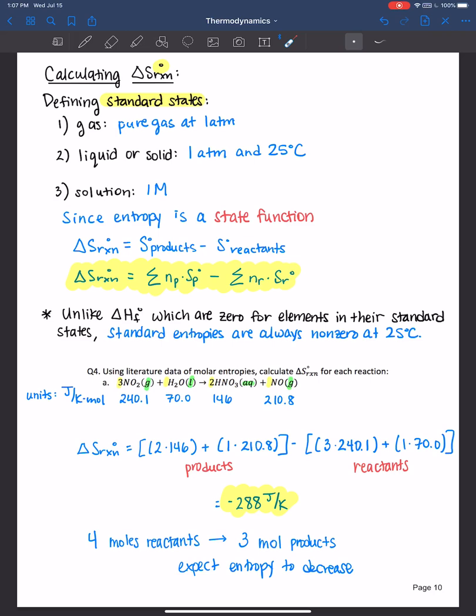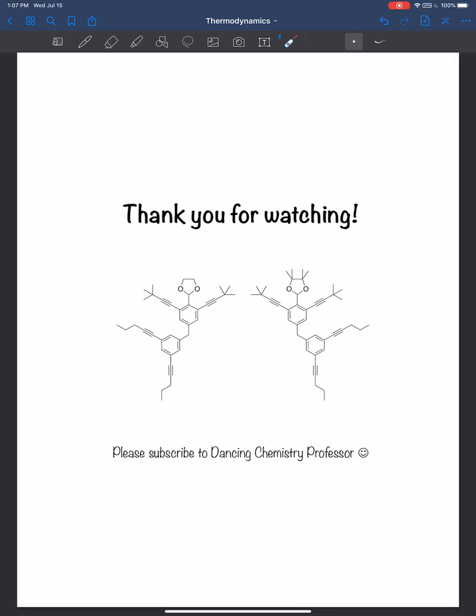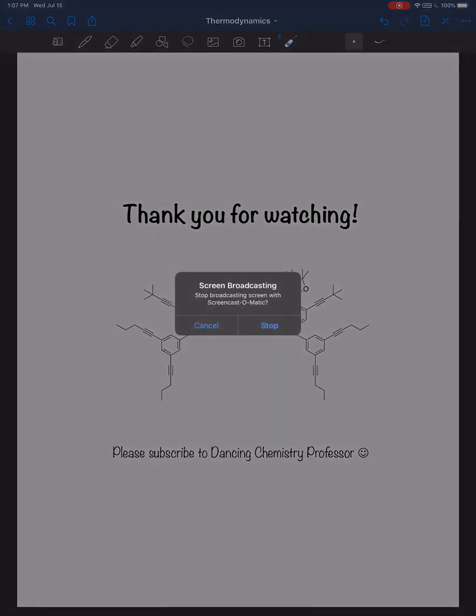We also learned that standard entropies are always non-zero because usually we're working at 25 degrees Celsius. But remember, enthalpy and later on Gibbs free energy are zero for elements in their standard states and like their most pure natural form there. And then we worked an example problem where we did see that we have a more ordered system here, more ordered reaction, and so that's the reason why the entropy of the reaction came out to be negative. Thank you all for watching and I'll see you next time.